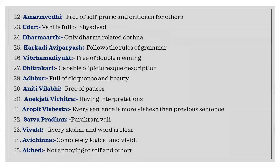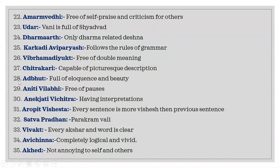Bhagwan's deshana has many interpretations — a Chaudh Purvi and a Tiriyanj will each understand according to their own doubts and abilities. Each sentence is more and more profound than the previous. Every Akshar is distinct, loud, and clear; it is full of Tark and Praman — logic and evidence. The last attribute is that no one listening to Bhagwan's deshana is ever annoyed. These are the 35 Atishais of Bhagwan's Vachana. Today being Vaisak, we visualized Bhagwan Mavir's deshana — and in Bhagwan Rushabhdev's Jivan Charitra, we will talk about the Samov Saran further.